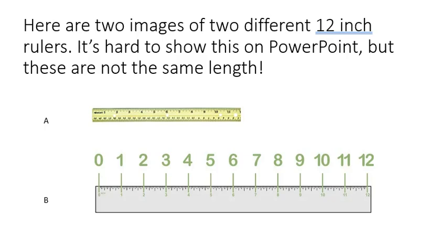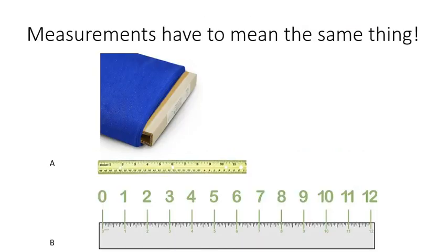Here's an example: two images of two different 12-inch rulers. These are not the same. Let's say I gave you instructions to measure some fabric — say, making masks. I said to use ruler A and then I use ruler B. Your results would not turn out the same as mine. When we use a physical measure, we have to be sure the measurement instrument is accurate and consistent. Invariance is related to that principle of consistency when the measure is used with different groups.